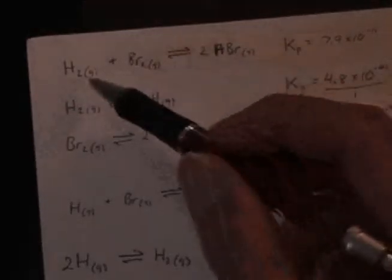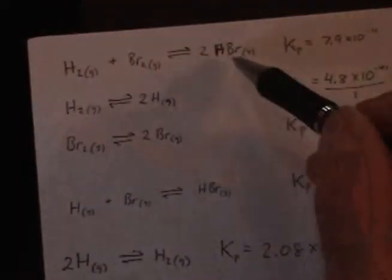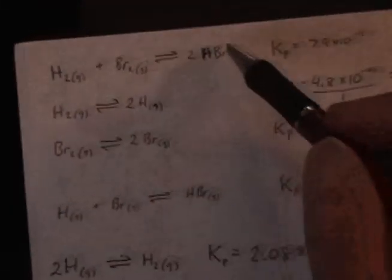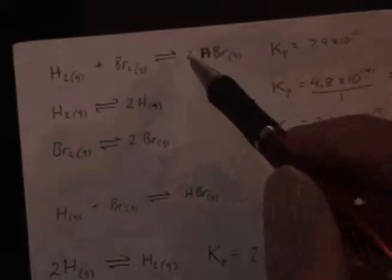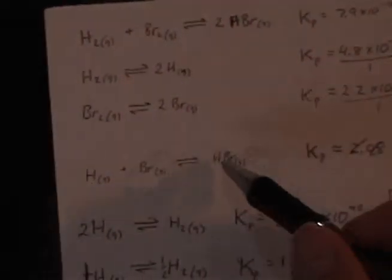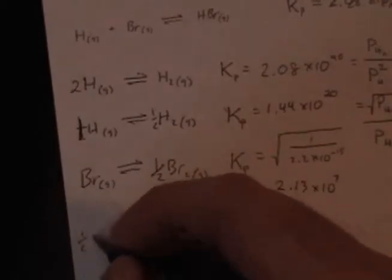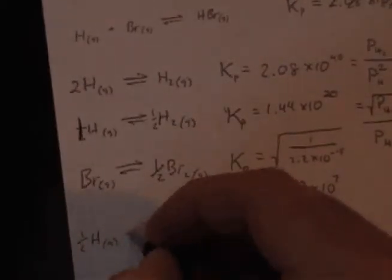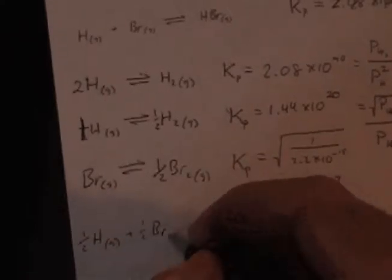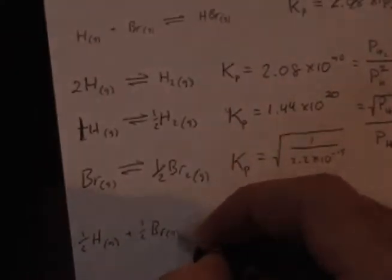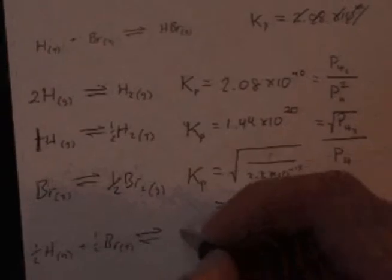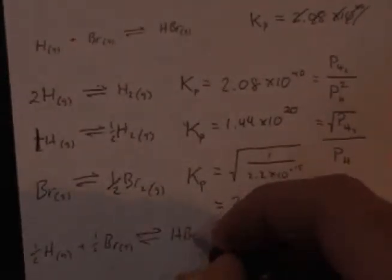And then the third equation, I'm happy with it like this, except the product I need over there, but I need to divide it by 2. So the equation that I really need here is 1 half H plus 1 half Br in equilibrium with HBr.